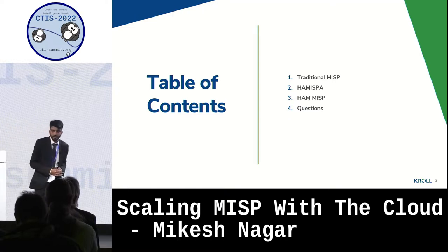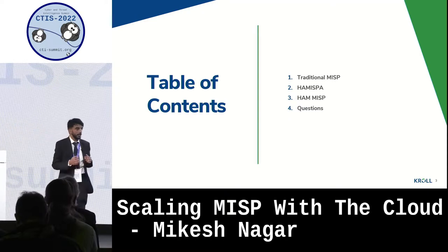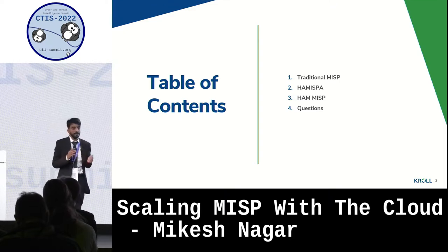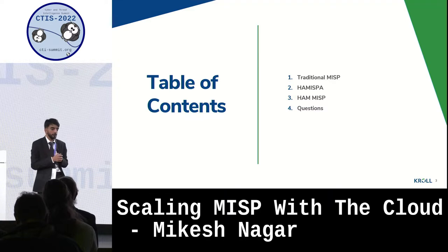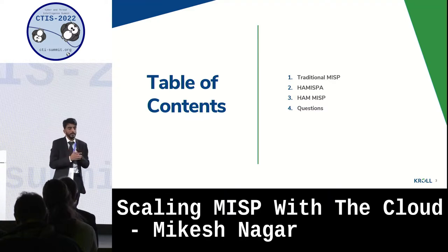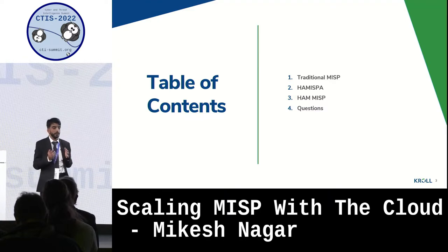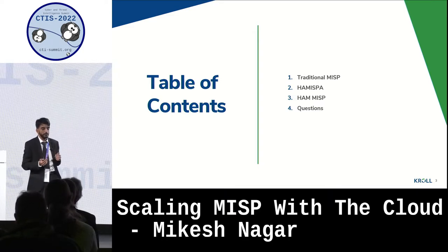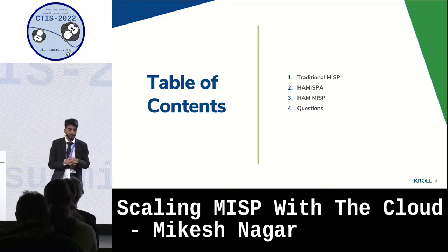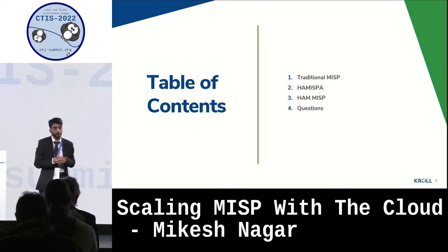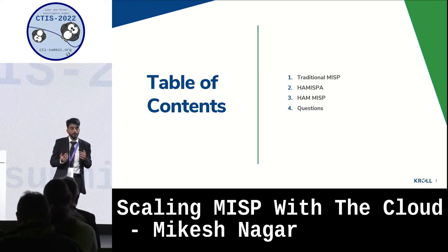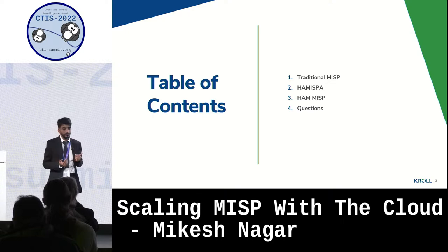In this keynote, we're going to discuss how Kroll has implemented MISP. We implemented MISP back in 2019 originally with the traditional MISP method. We then outgrew it very quickly and found a project by Tiago, which was ha-misp-a — high-availability MISP in AWS. We'll then move on to our implementation called HAM-MISP and conclude with some questions.